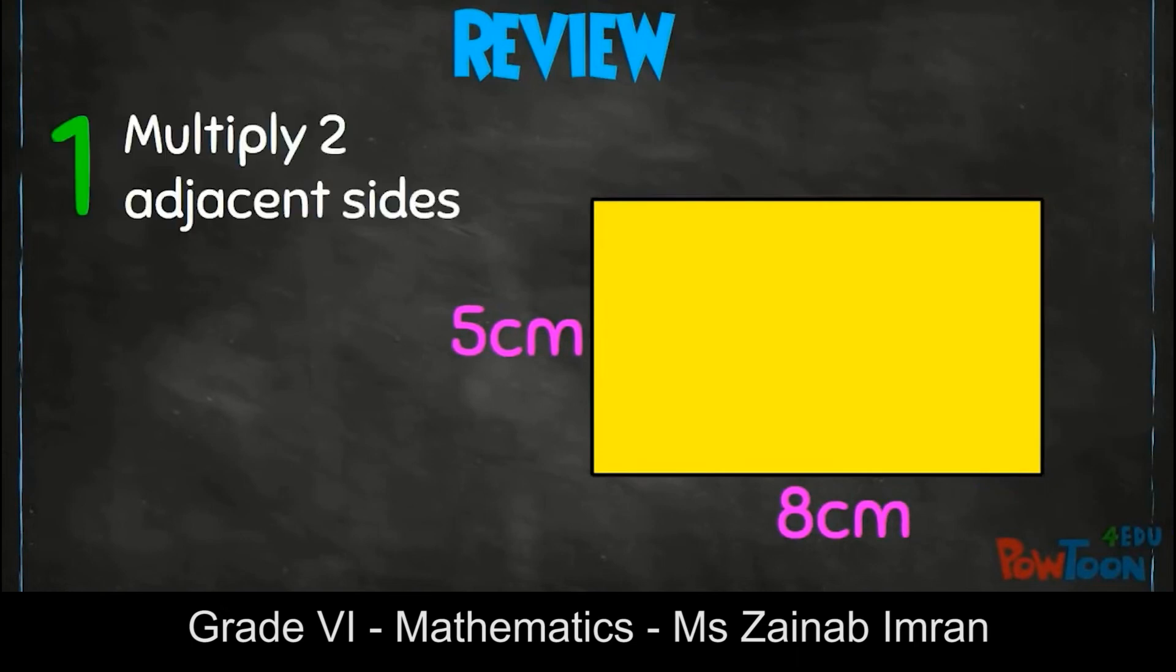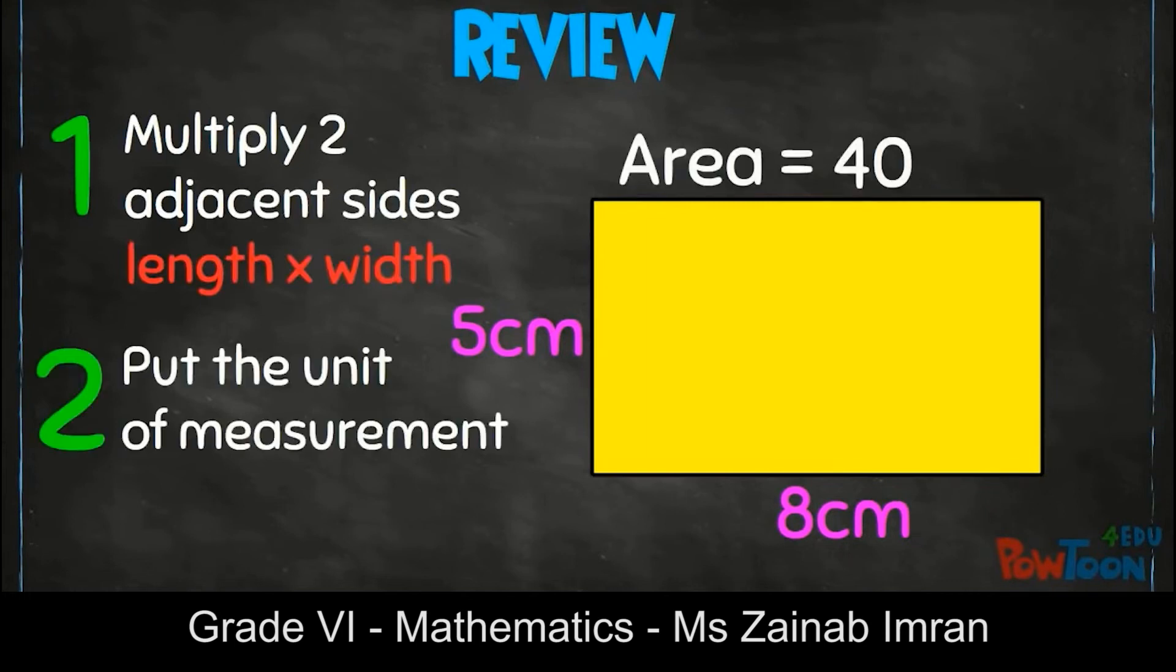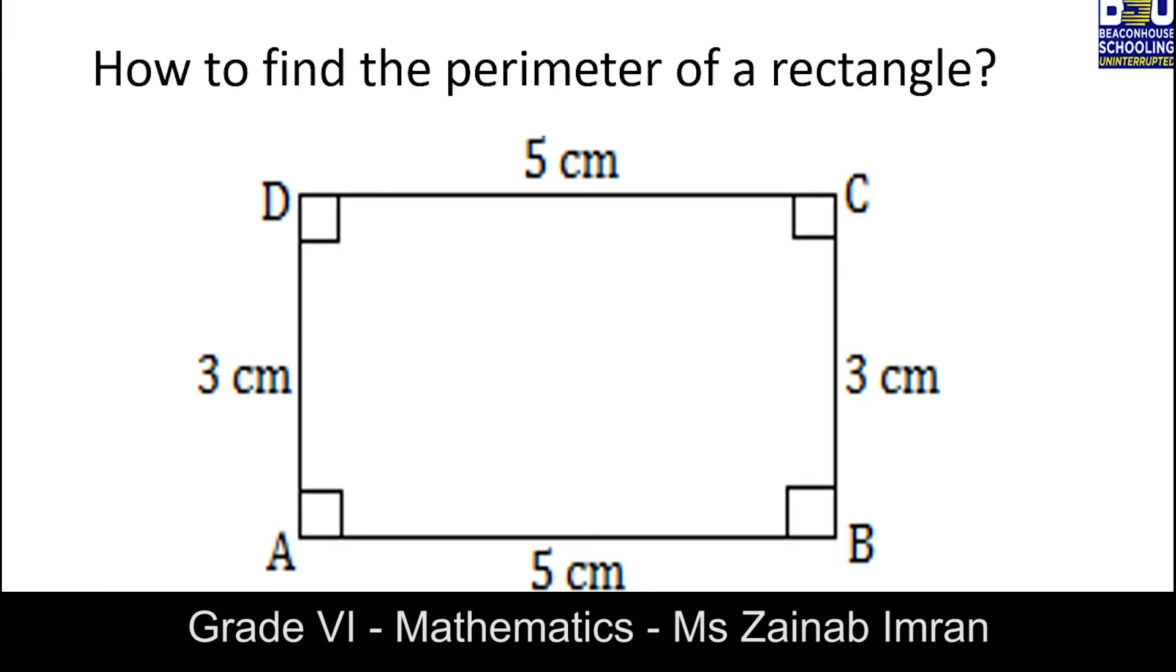So if you add all these sides like 5 centimeters plus 3 centimeters plus 5 centimeters plus 3 centimeters, you will get the perimeter of a rectangle. So it equals 16 centimeters.